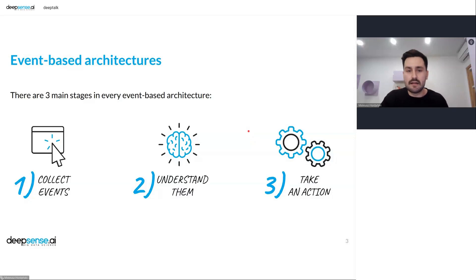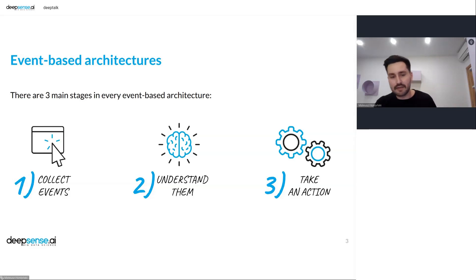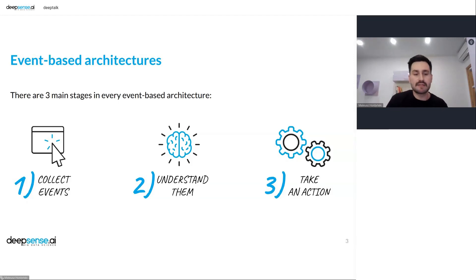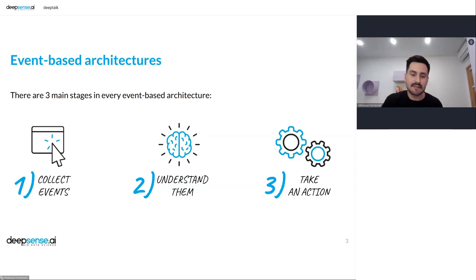So what is event-based architecture? To really understand that, we need to know what an event is. Imagine we are running some online shop — an e-commerce website. Let's focus on one user and his journey through our website. He probably begins by visiting our homepage, then may select the search bar and type something like 'laptops,' then click on a product and buy one.